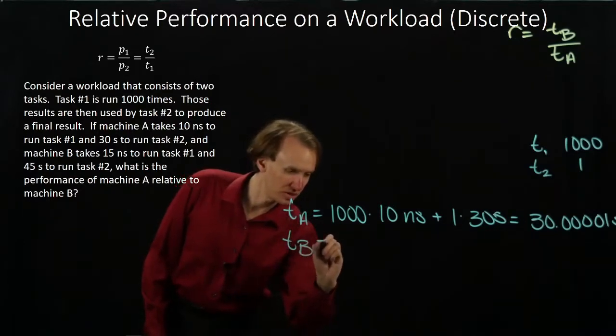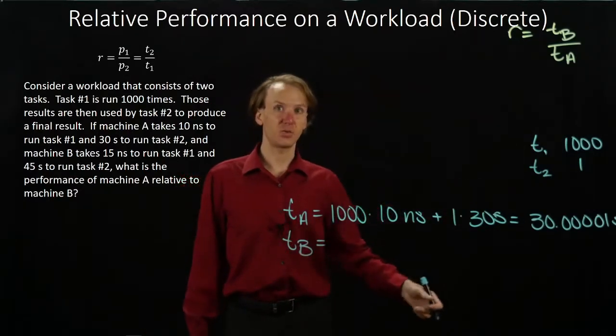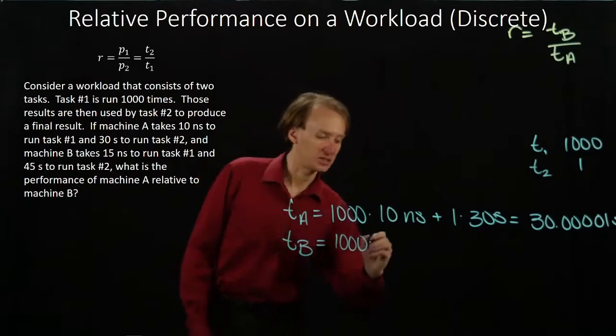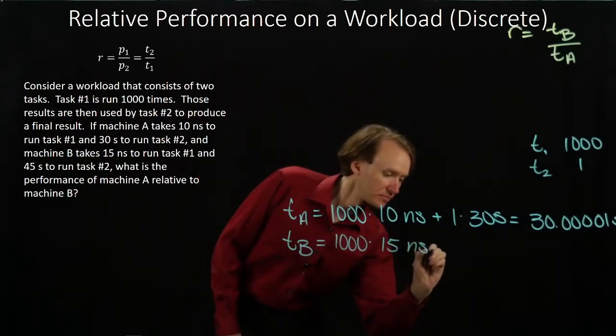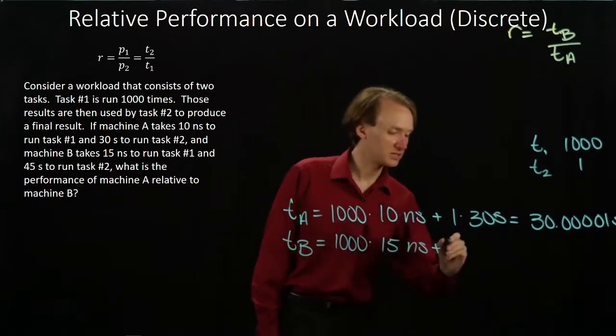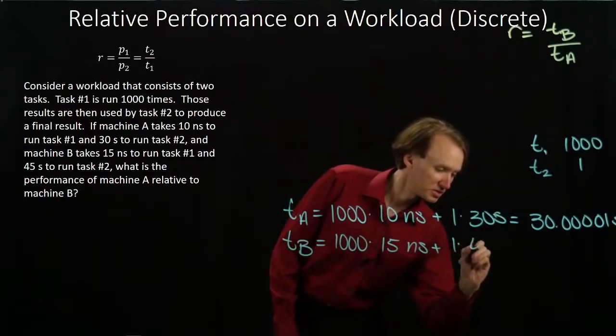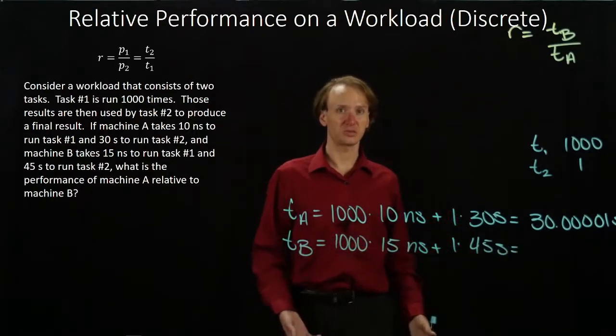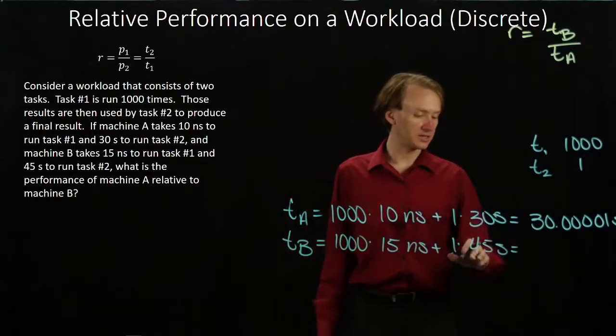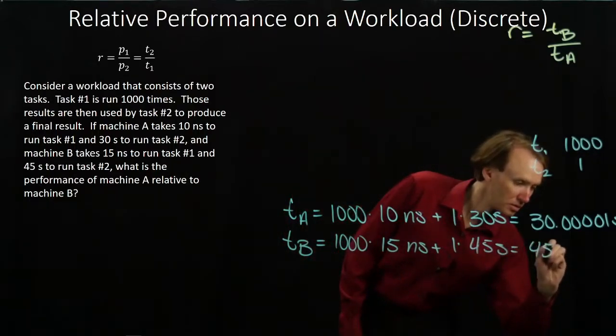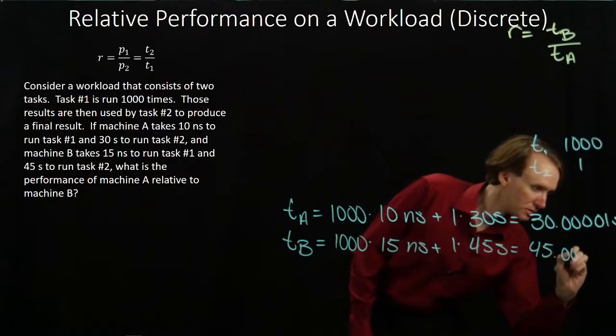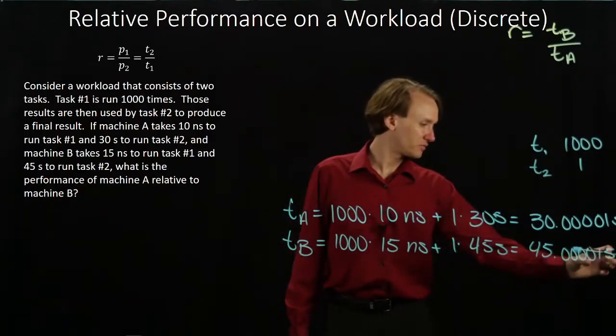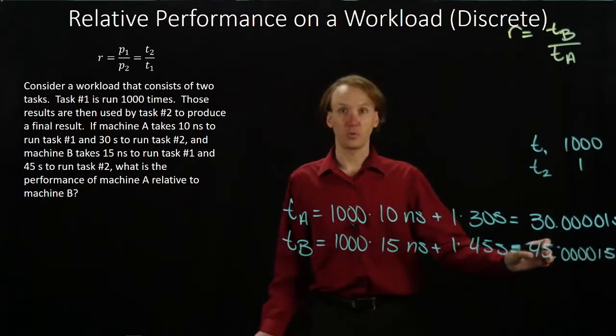For machine B, I still have 1,000 times of task one that we're on. Each of those take 15 nanoseconds. And then we have one instance of task two, which takes 45 seconds. So 1,000 times 15 nanoseconds will give me 15 microseconds, and I'll add that to the 45 seconds. So again, there's my 15 microseconds and my 45 seconds.